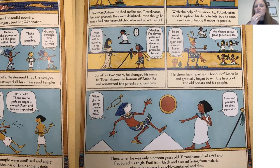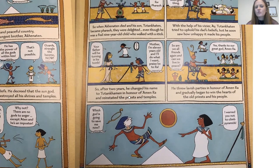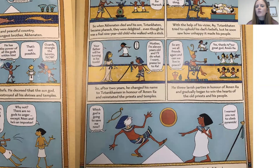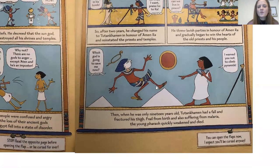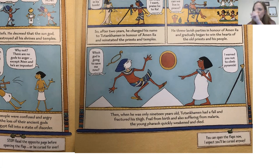After two years he changed his name to Tutankhamen in honor of Amun-Ra and reinstated the priests in the temples. 'Your father will be turning in his tomb.' 'Mother, I'm 11 years old and I'll do what I want.' 'Praise be to Ra.' He threw lavish parties in honor of Amun-Ra and gradually began to win the hearts of the old priests and his people. 'So are we all friends again? Can we live in peace?' 'Yes, thanks to our great god Amun-Ra.' Then when he was only 19 years old, Tutankhamen had a fall and fractured his thigh. Frail from birth and also suffering from malaria, the young pharaoh quickly weakened and died. 'Which god is going to save me now?' 'I warned you not to climb the pyramids.'